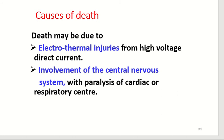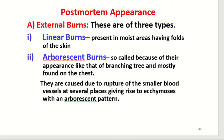The post-mortem appearance in a dead body from lightning — both external and internal — will now be discussed. For external burns, there are three types. First, linear burns, which are present in moist areas having folds of the skin. Second, arborescent burns, so called because of their appearance like that of a branching tree, mostly found on the chest. They are caused due to rupture of smaller blood vessels, giving rise to ecchymosis with an arborescent pattern.